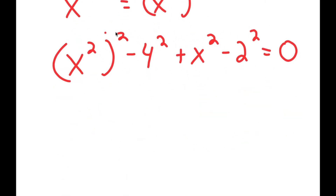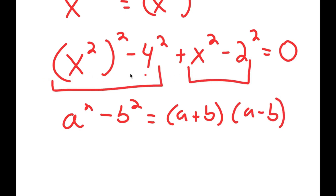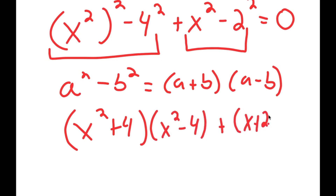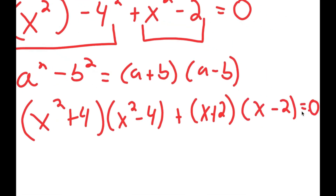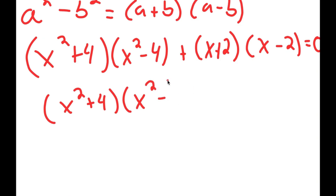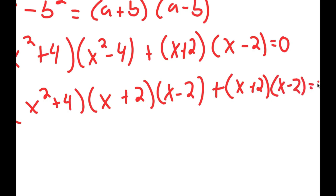Notice how everything is in the power of 2. Using the difference of squares: a squared minus b squared equals a plus b times a minus b. Applying this to both groups, I get x squared plus 4 times x squared minus 4, plus x plus 2 times x minus 2, all equal to 0.